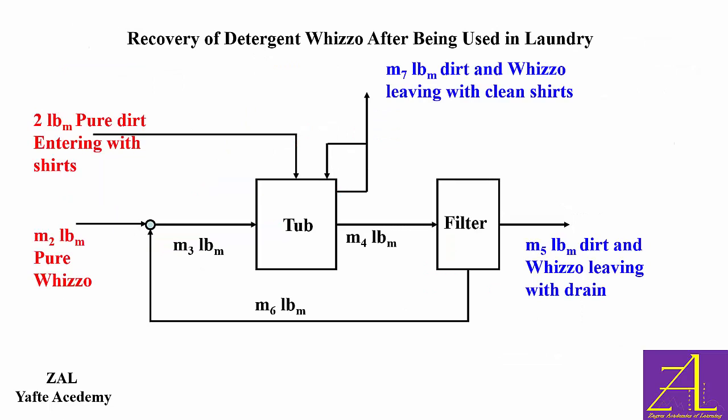Sometimes one may decide to partially label the main flowchart in order to avoid crowding it. An alternative main flowchart for the laundry problem is given where compositions of streams are not shown and are postponed for later.